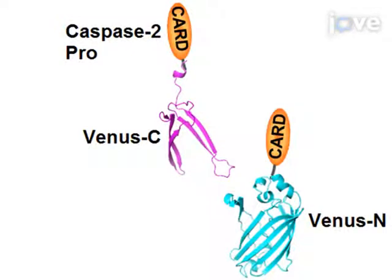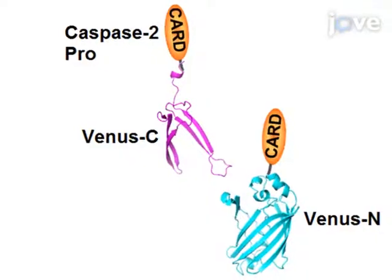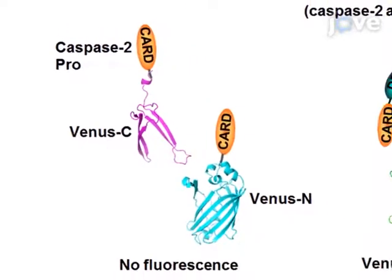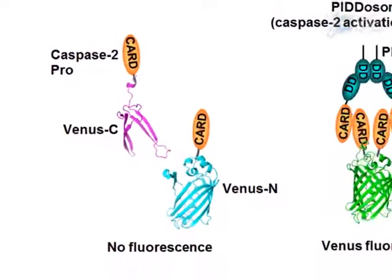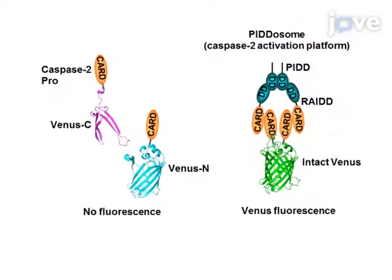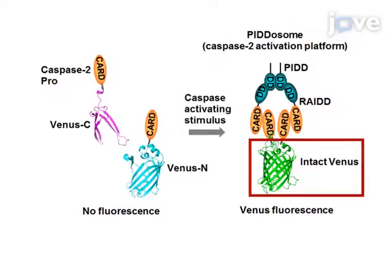This biomolecular fluorescence complementation method uses fragments of the fluorescent protein Venus that have been fused to a caspase. The fragments are not fluorescent on their own, but when the caspase undergoes induced proximity, this brings the two Venus halves together and they light up.